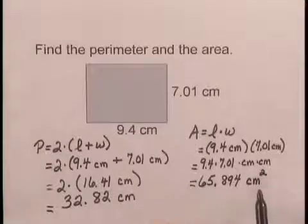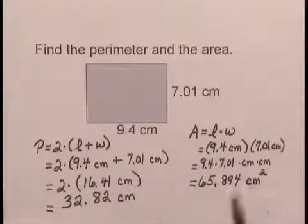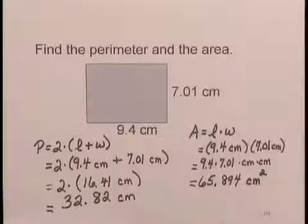Note the difference between the units for perimeter, which is centimeters, and area, which is square centimeters. So we have found the perimeter and the area of the rectangle.